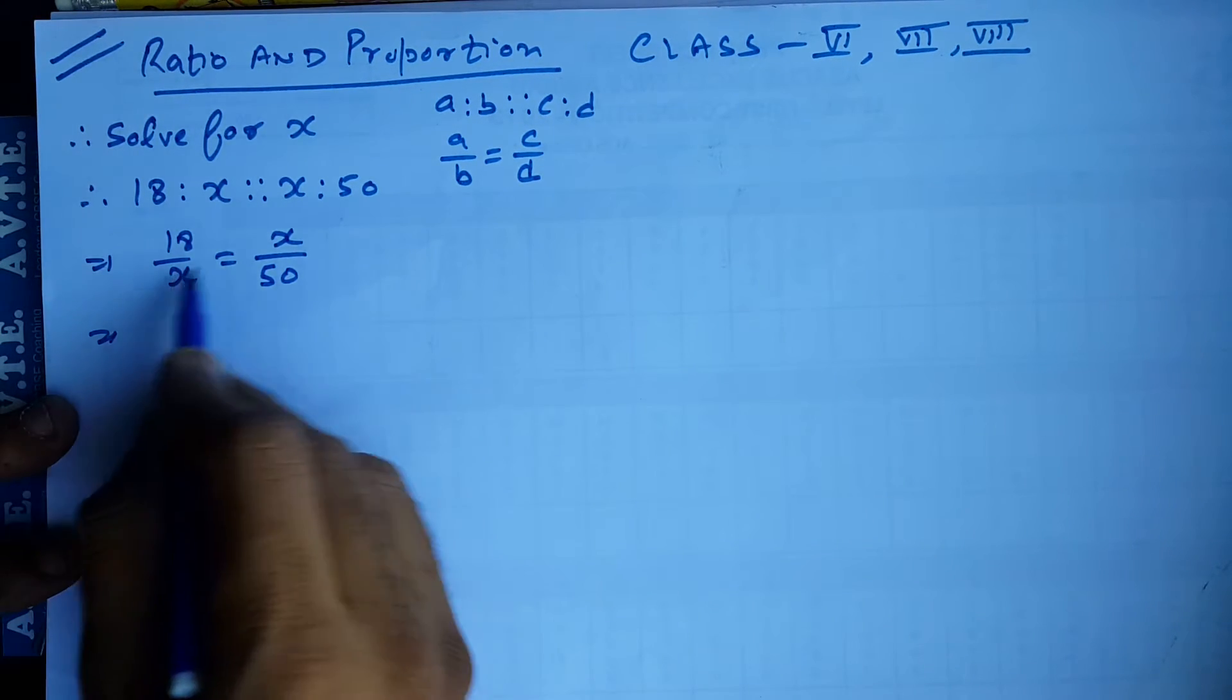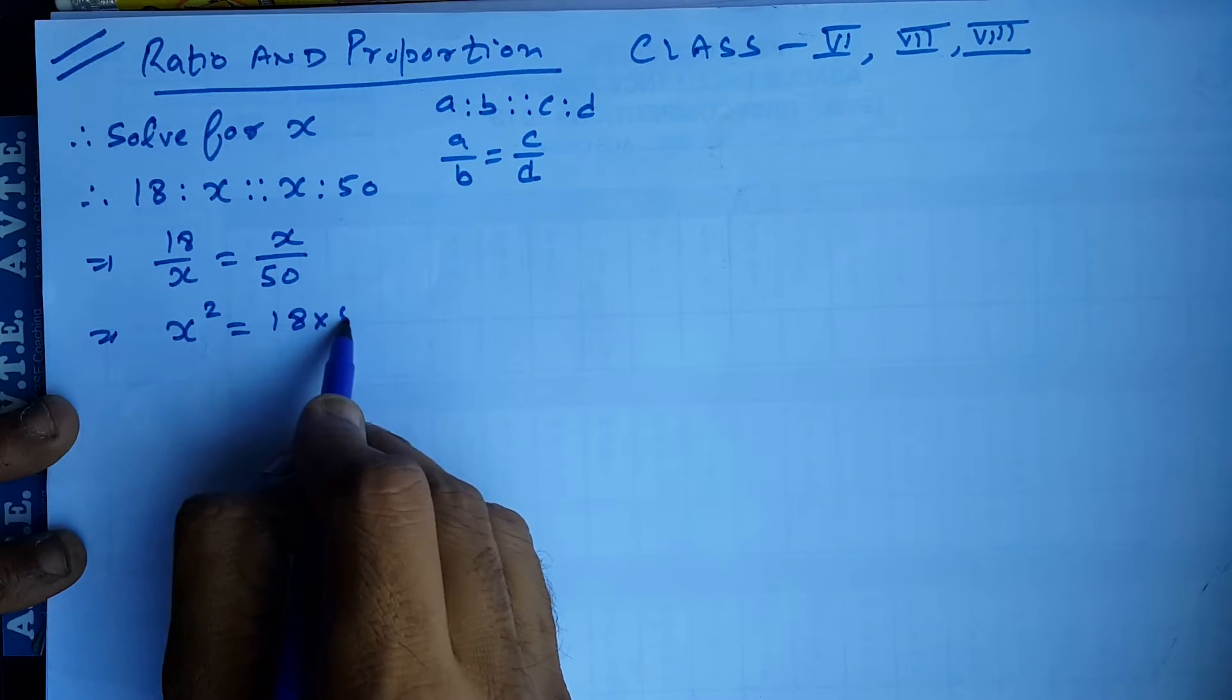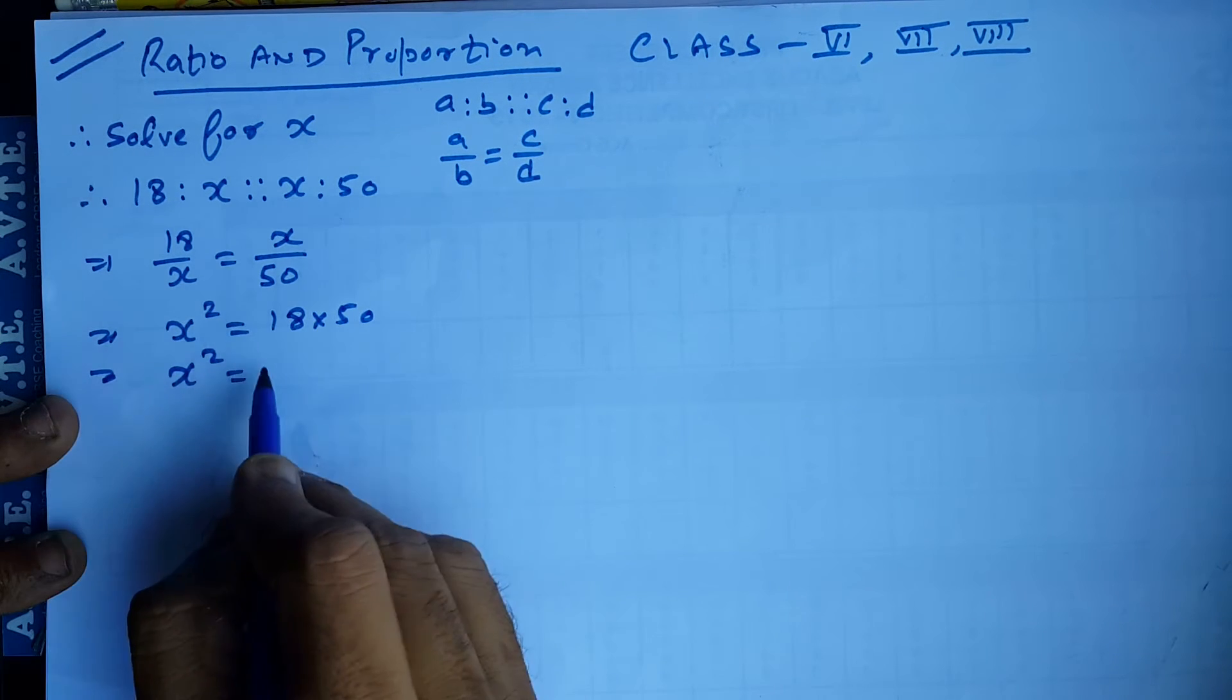So this is x into x is x squared and 18 into 50 is like this. So this is x squared, this is 900.